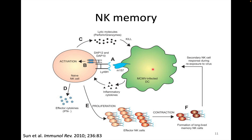We now think of NK cells as being able to be activated, proliferate, differentiate into more effector type cells, contract, and form long-lived memory cells that make more of a secondary type of response. This type of phenomenon — memory formation — has always been thought of as one of the defining factors of the adaptive immune response. This further complicates our question of whether NK cells are innate or adaptive.